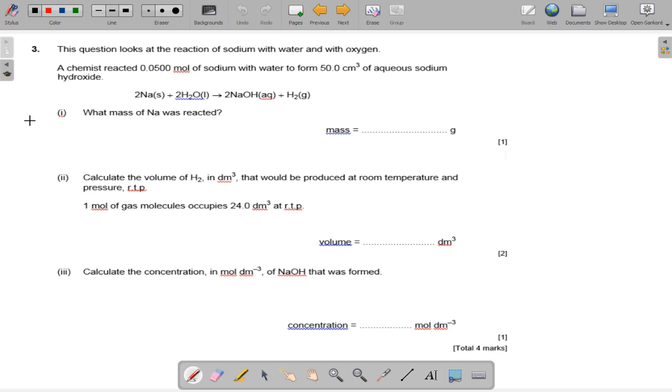And for this question now, what mass of sodium was reacted if we know that 0.05 moles of sodium was reacted with water to form centimeter cubed of sodium hydroxide? We need to work out the volume of hydrogen gas released, and we need to calculate the concentration in moles per decimeter cubed of sodium hydroxide that was formed.